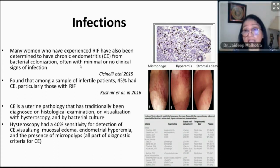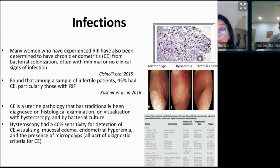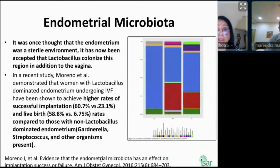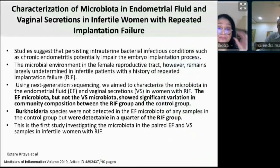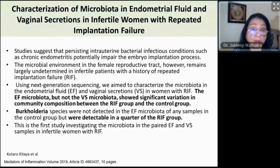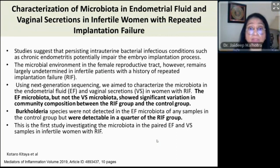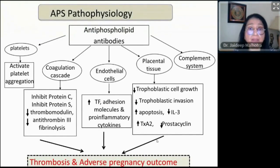Regarding infections, hysteroscopic findings of micropolyps, hyperemia, or stromal edema need to be considered. The latest development is endometrial microbiota — there is different colonization of lactobacillus in the vagina, cervix, and endometrium. Certain microbes are more detectable in recurrent implantation failure cases, which may throw a very different light on how we treat or create protocols for recurrent implantation failures.